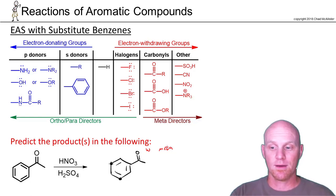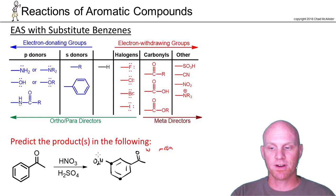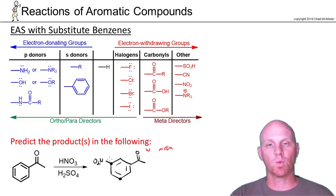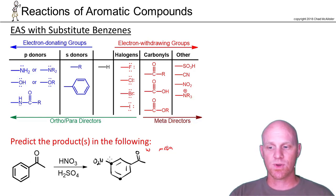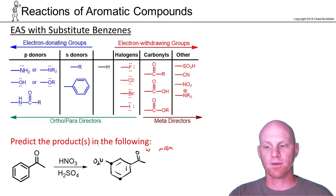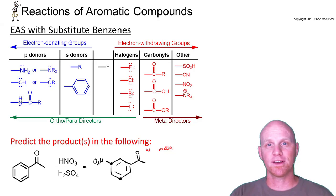So I'm just going to choose this one. When you're predicting products, you should just assume the reaction is going to happen once, unless it's implied otherwise. In this case, we added one nitro group to one of the meta-positions, and there's the product we're predicting.